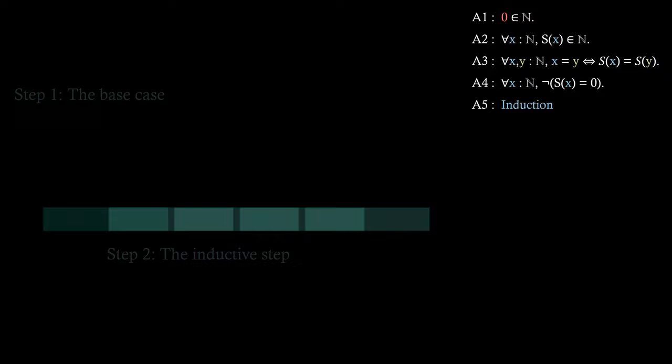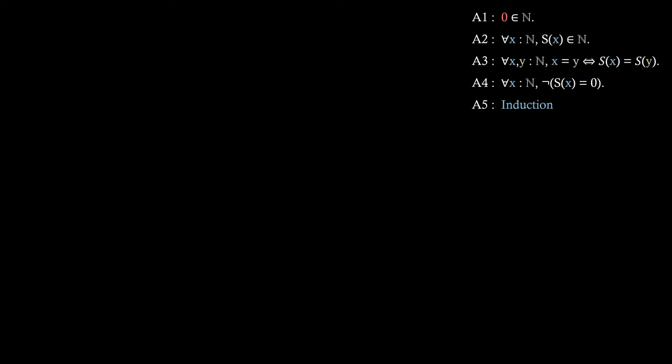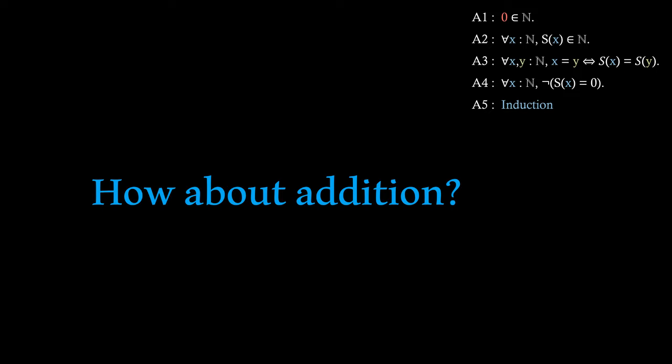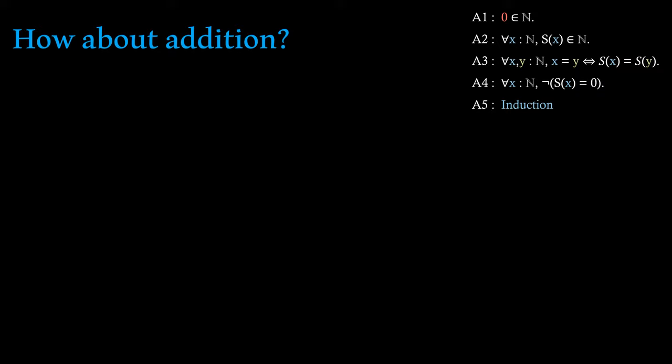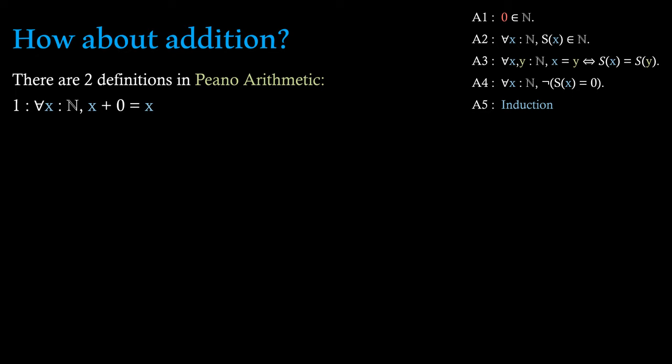Looking at the axioms, you might wonder how someone would do addition and multiplication — that's something we can't do yet using just the axioms defined. So let's start with addition. Addition itself takes two more definitions in Peano arithmetic. The first is an identity definition: for all natural numbers x, x plus 0 is just x. The second states that for all natural numbers, x plus the successor of y is just the successor of the sum of the two. This second definition allows any sort of addition.